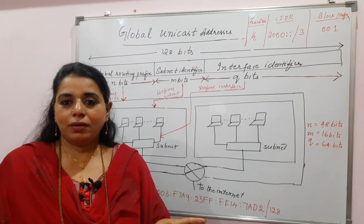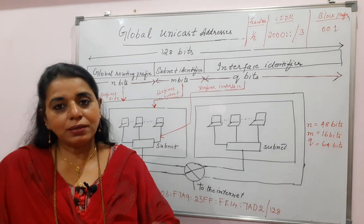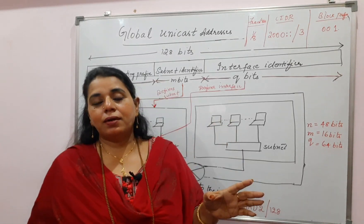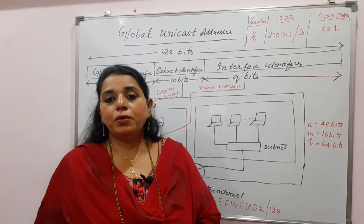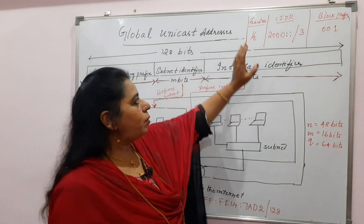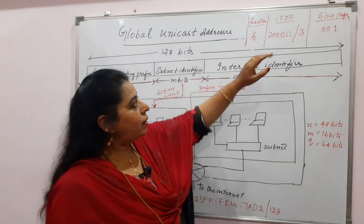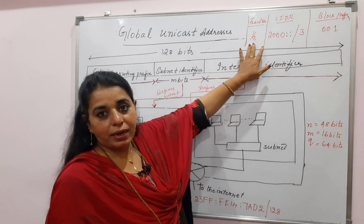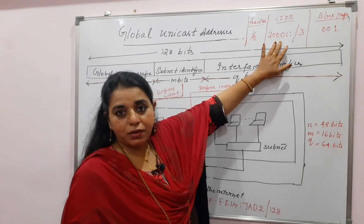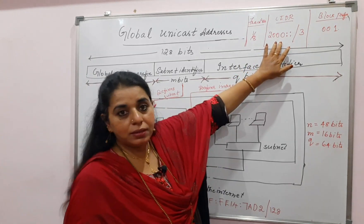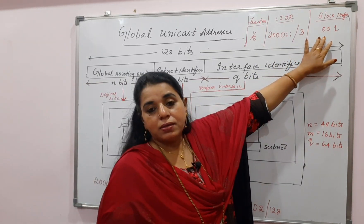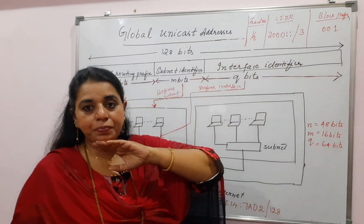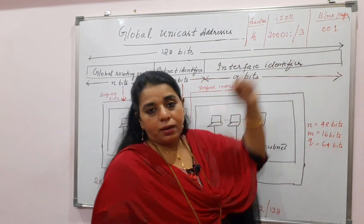In the address space allocation of IPv6, you have seen there are five different blocks, and one of the blocks is the major block consisting of a huge number of addresses. The largest block is the global unicast addresses. One-eighth of IPv6 addresses comes under this block. The CIDR notation for this block is given here, and the prefix is 001 — meaning any IPv6 address starting with these three digits 001 is a global unicast address.